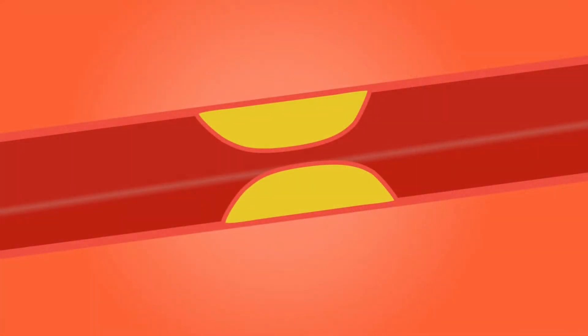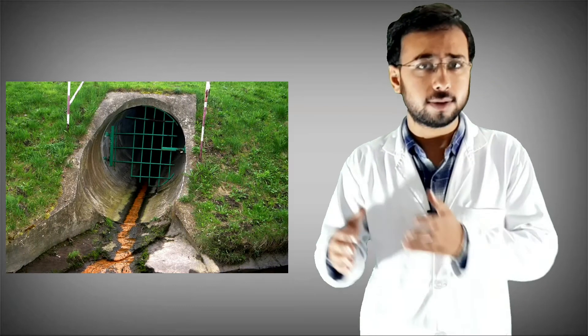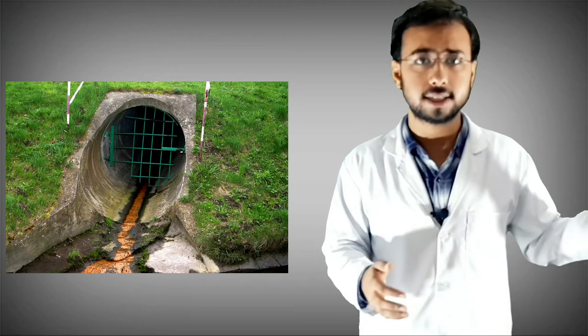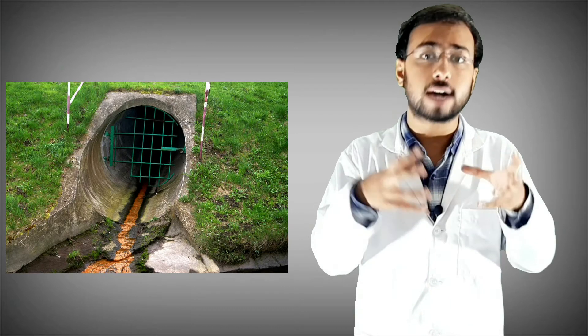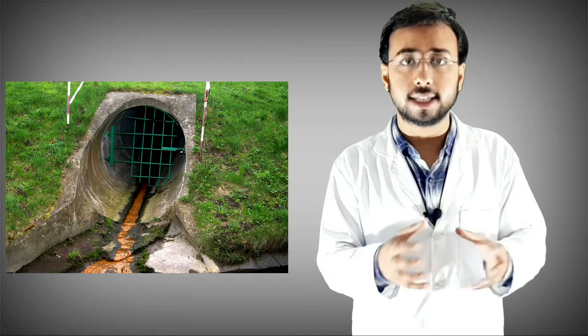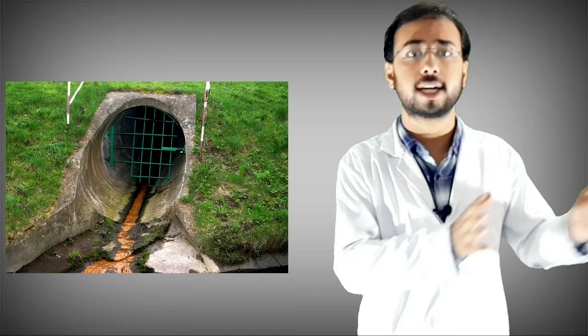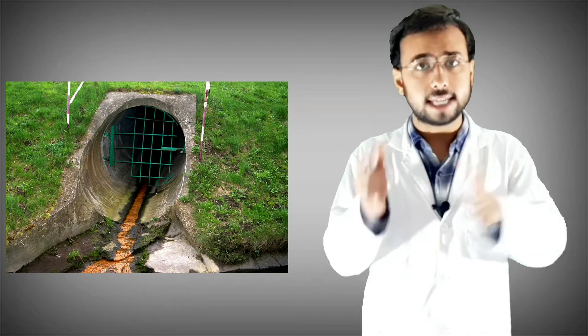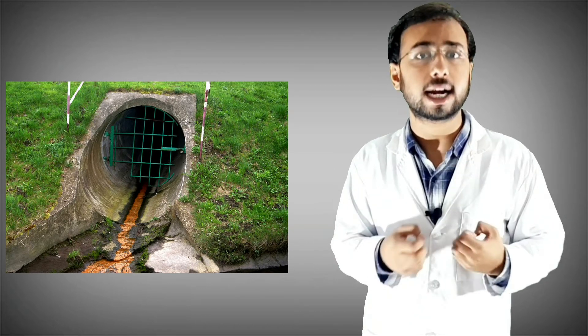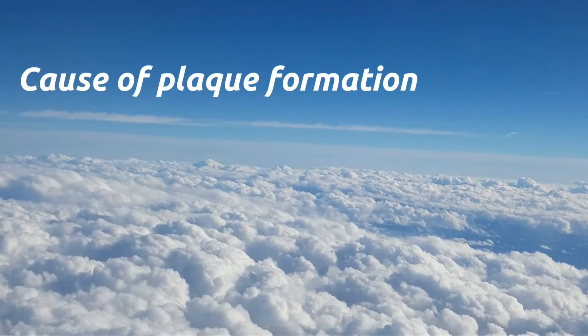Let's start with the first question: why does blockage occur? Blockage occurs due to plaque formation in the veins and arteries, which obstructs the normal flow of blood. It's similar to a drainage system — when lots of garbage accumulates in a drain, it obstructs water flow from one side to another. Similarly, when plaque deposition occurs in blood vessels, it obstructs blood flow from one point to another.